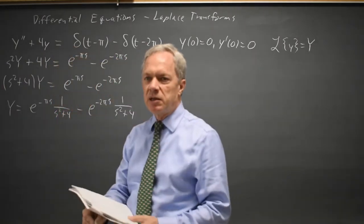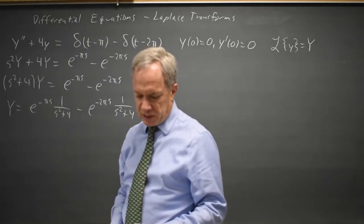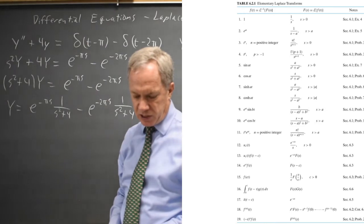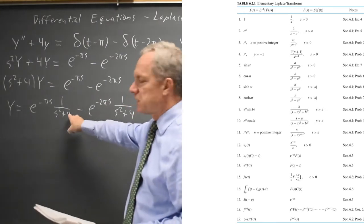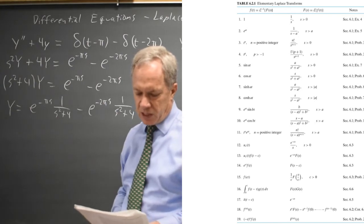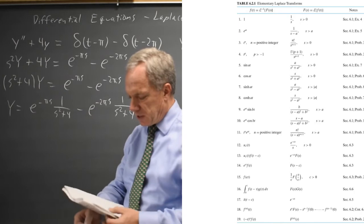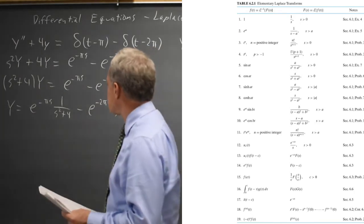Looking at my table, I recognize that e to the negative pi s times a function puts me in line 13 if the e to the negative pi s is multiplied by the transform of my solution. And 1 over s squared plus 4 looks like line 5, which should be a over s squared plus a squared, which means I prefer to have a numerator of 2.